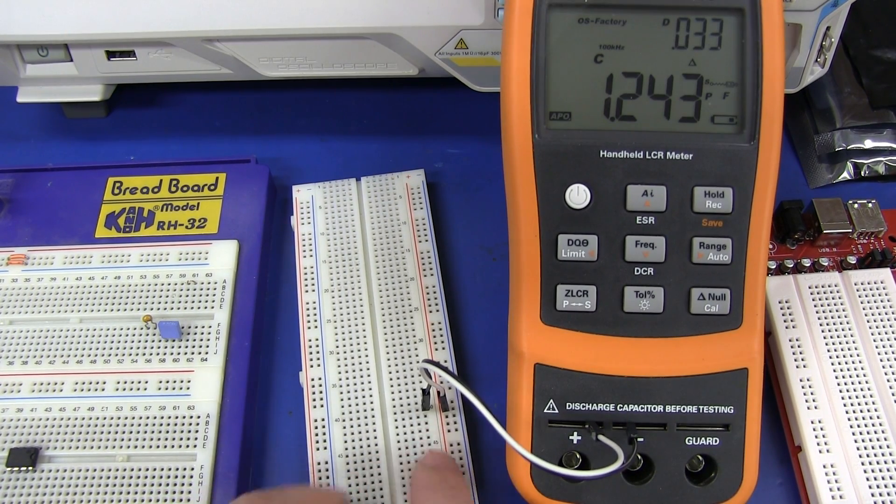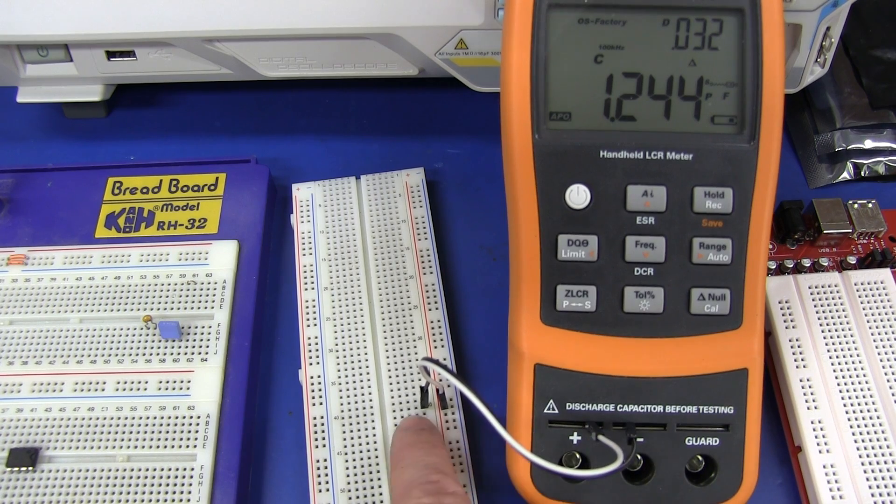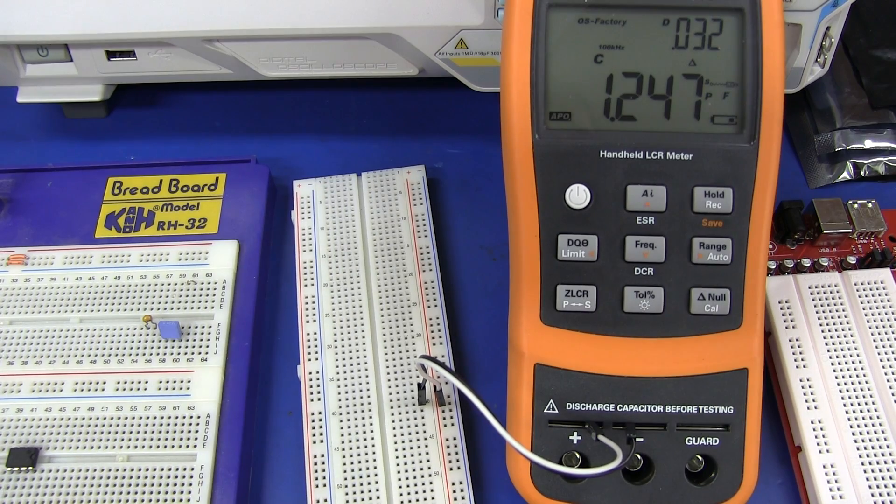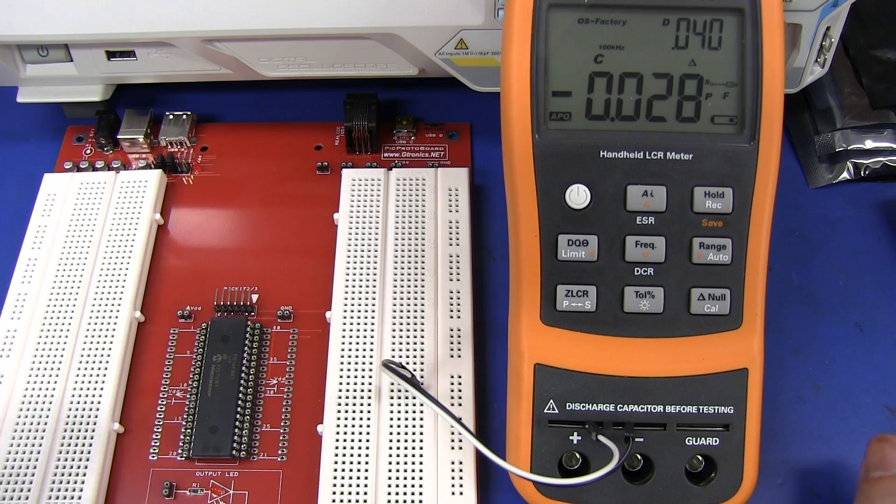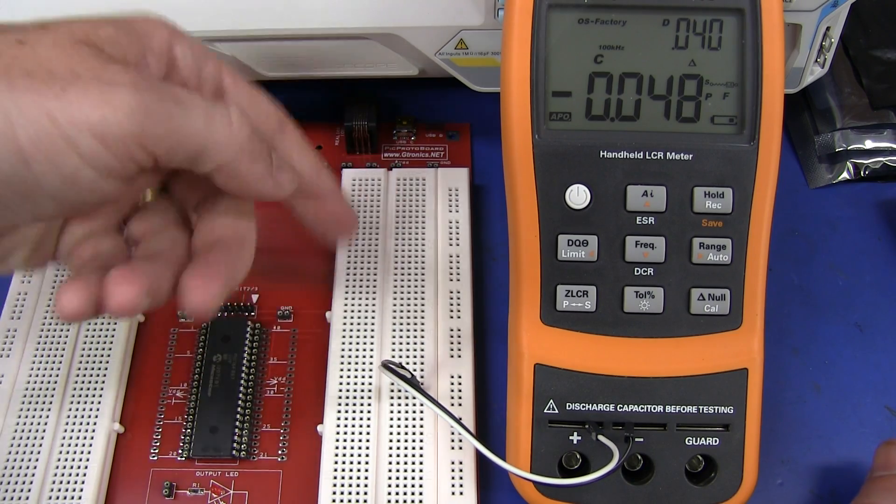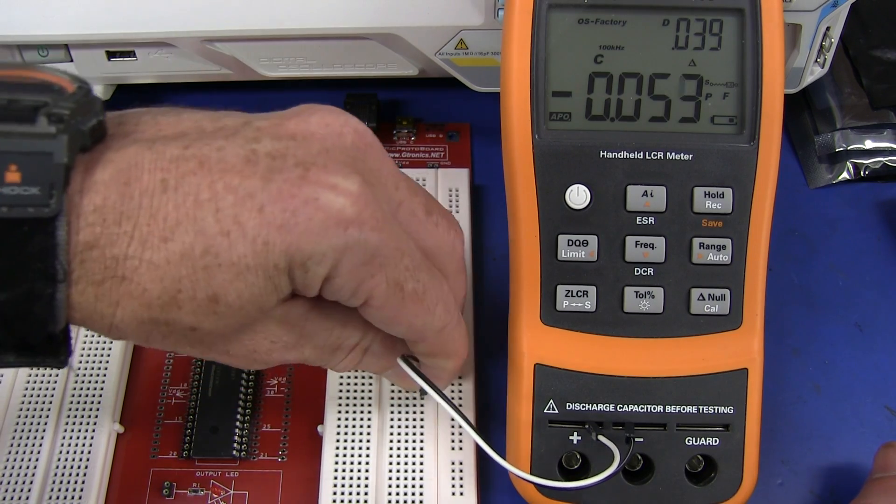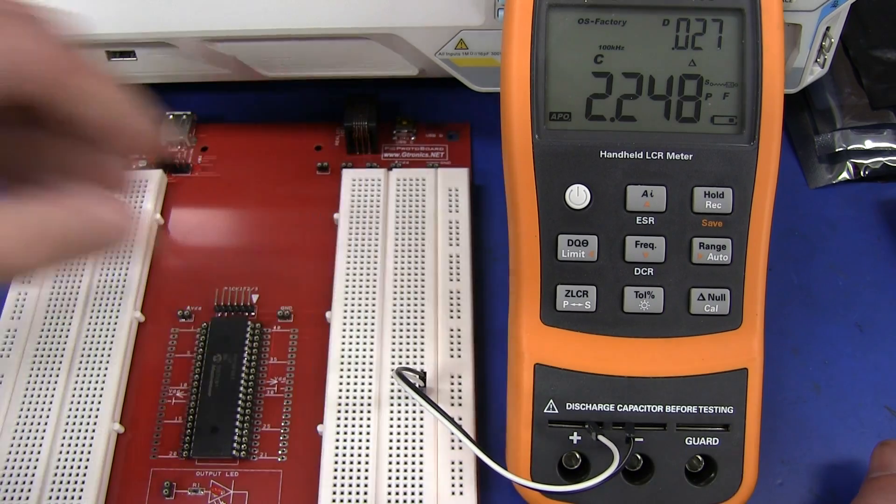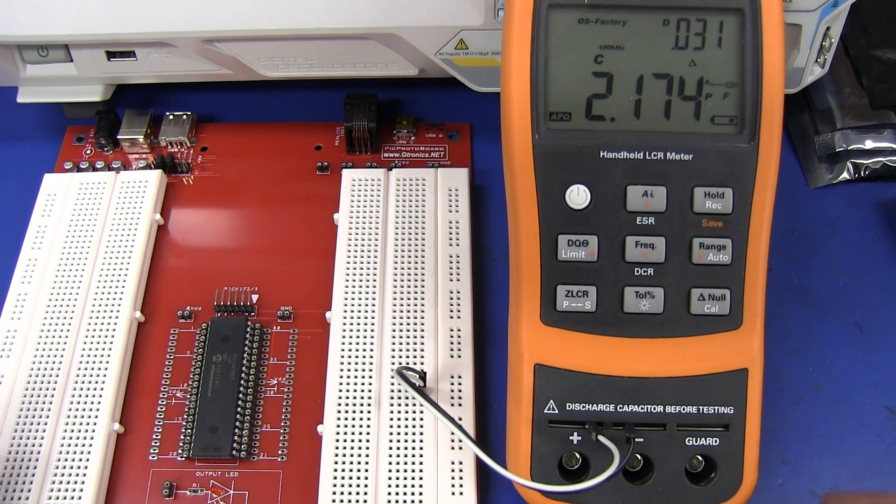And one thing I forgot on the other one, here is to know between the power strip and one of the columns in there, we're talking just over 1 puff. And this pic development board from gtronics.net, I don't know the brand of the actual breadboard in here. Don't know where he sources it from, but there you go. Once again, that 2 puff figure. You can take that to the bank.